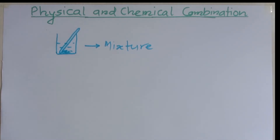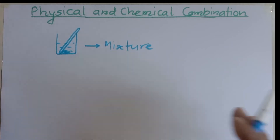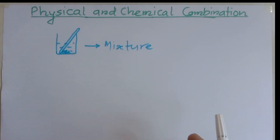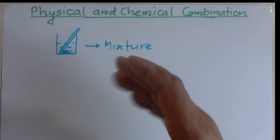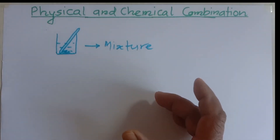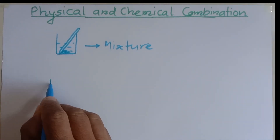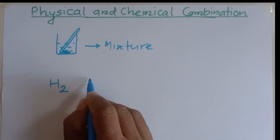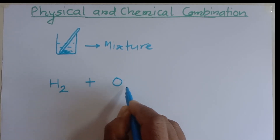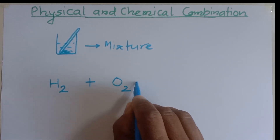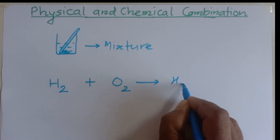The combination may be of another type also. If two substances combine in such a way that the final substance doesn't contain their original properties, that is called chemical combination. For example, when hydrogen combines with oxygen, they form water — as we all know.